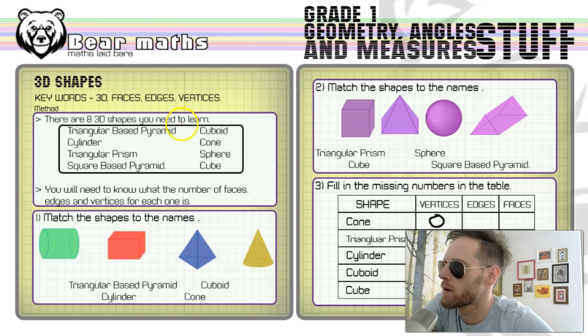Now the keywords in this video are 3D, faces, edges, and vertices—terms you definitely need to understand. 3D stands for three-dimensional. The world we live in, everything around us, is in 3D. Faces are the flat bits of the shapes. Edges are the straight lines that join the corners together, and the vertices are the corners of each shape.